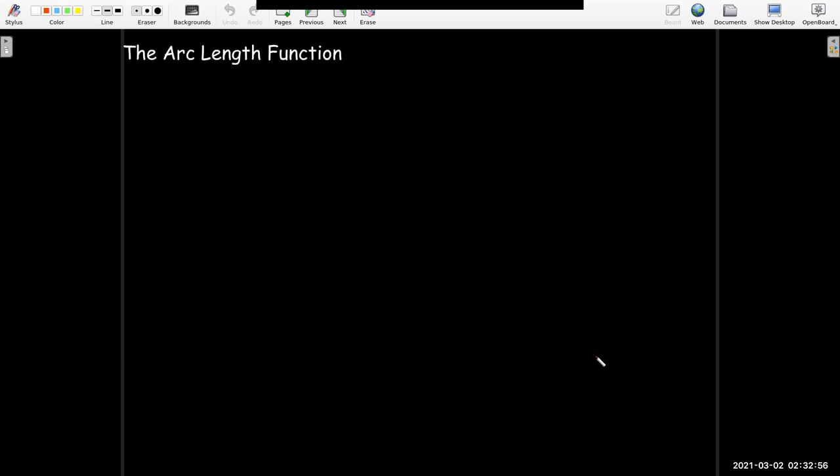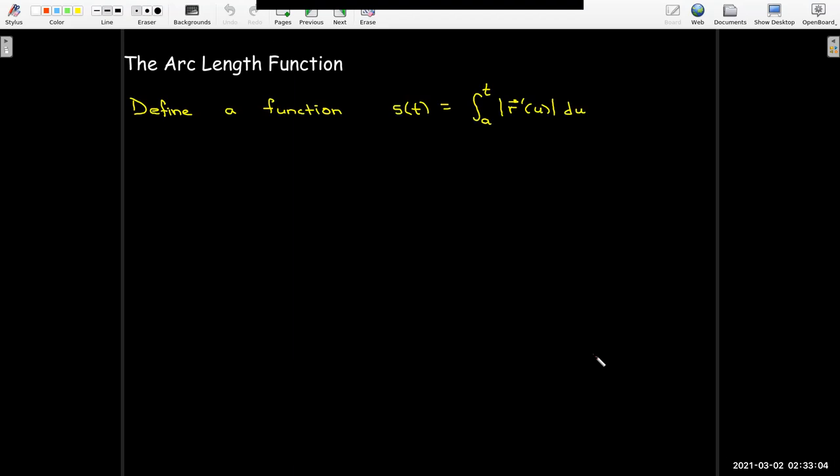Now looking ahead, the arc length formula is useful, but another thing that's useful is to define an arc length function. So I'm going to define s of t as the integral from a to t of the length of r prime of u du. So t now is just the upper bound, and I'm using a different letter for my variable of integration.